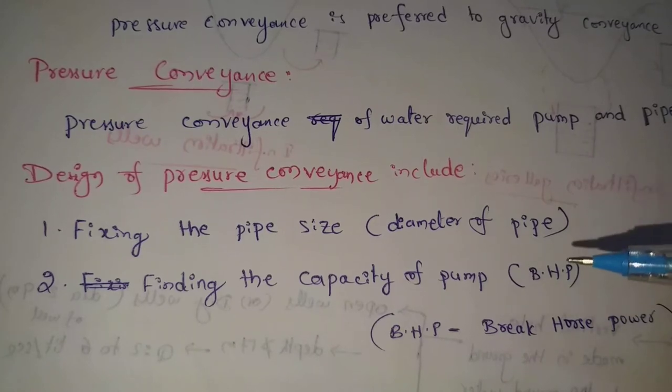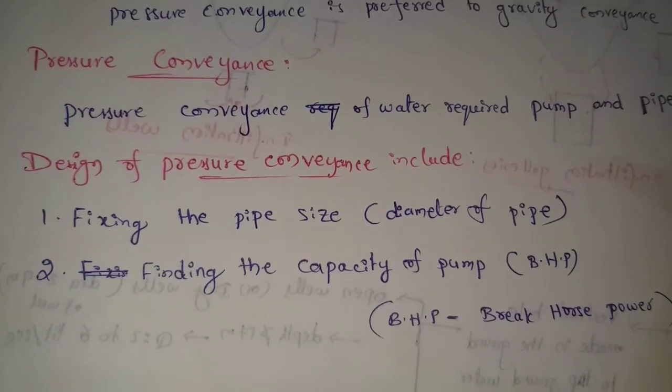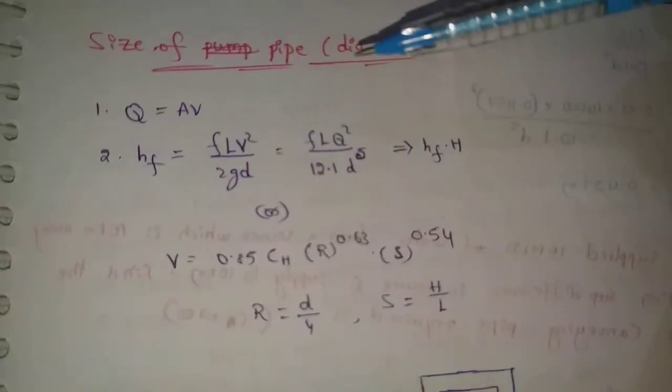We will find the capacity of the pump, which is BHP. BHP means break horse power. Next is size of pipe. First step in design of pressure conveyance is finding the pipe size and diameter.